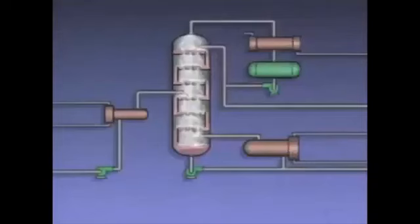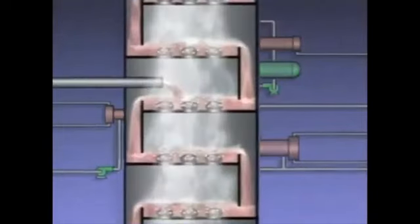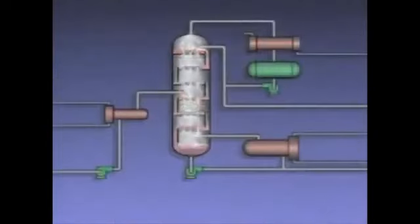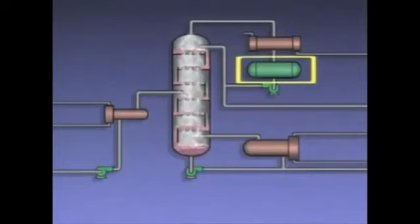If the feed rate to a distillation column is too high, overloading and flooding can occur. But the performance of a distillation system can also suffer if the feed rate is too low. For example, if the feed rate to the column in this system decreases, the level of condensed overhead vapor in the receiver and the level of liquid in the bottom of the column will start to drop.